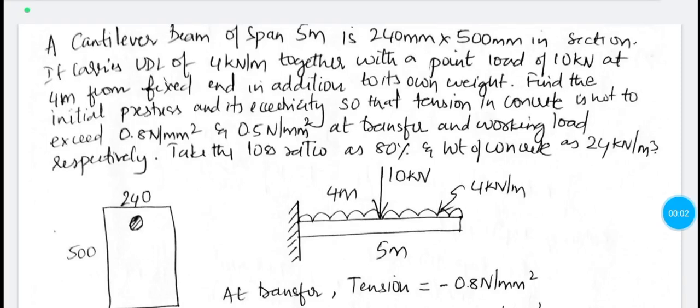A cantilever beam of span 5 meter is 240 by 500 mm in section. It carries UDL of 4 kN per meter together with a point load of 10 kN at 4 m from fixed end in addition to its own weight.